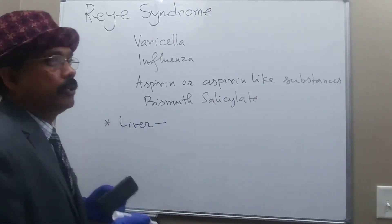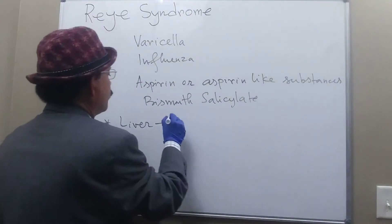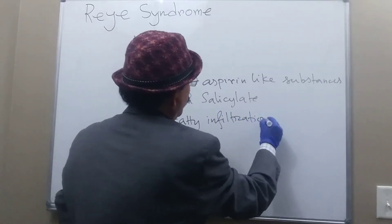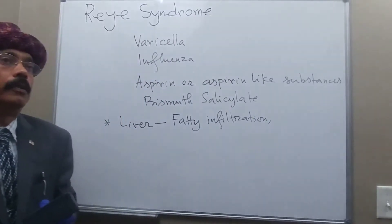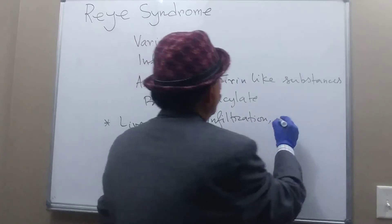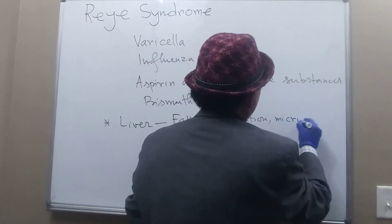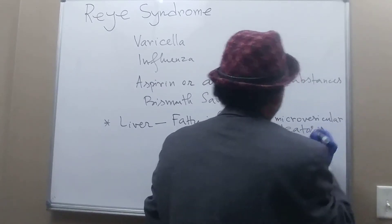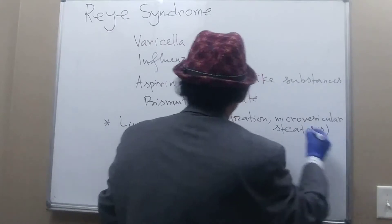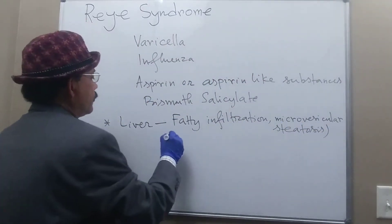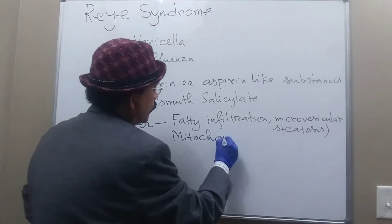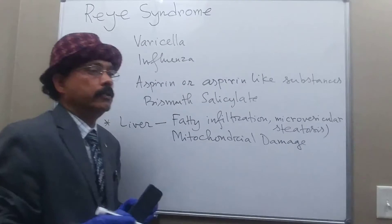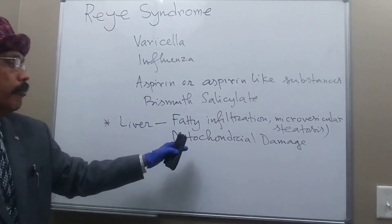What is the pathogenesis in the liver? In the liver there will be fatty infiltration — we call it microvesicular steatosis — and mitochondrial damage to the cells like the hepatocytes.